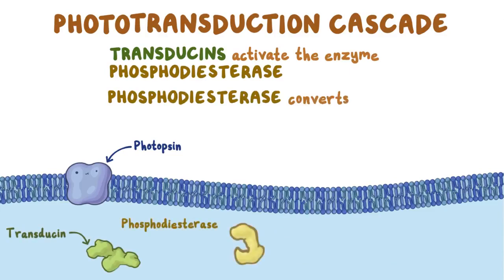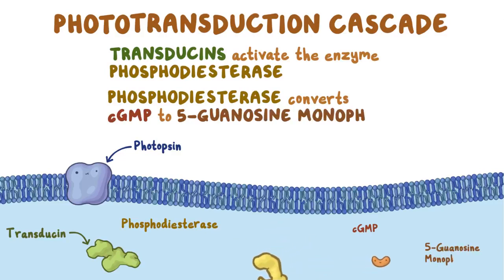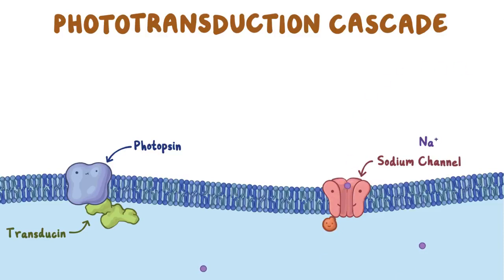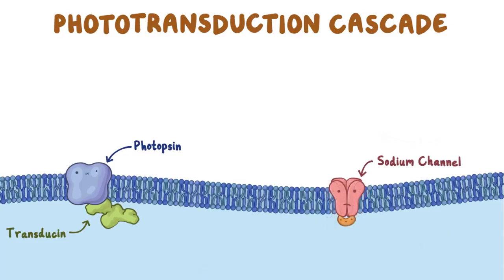Phosphodiesterase converts cyclic guanosine monophosphate, or cGMP, to 5-guanosine monophosphate. Normally, rods and cones have sodium channels which are bound to cGMP that allow sodium to continuously flow into the cell. When phosphodiesterase converts cyclic GMP to 5-guanosine monophosphate, there's less cyclic GMP within the cell available to bind sodium channels. Therefore, the sodium channels close.